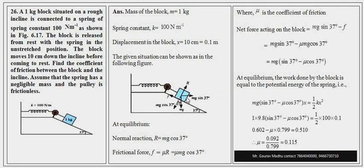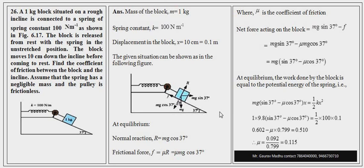जब block 10 cm पर आकर रुक जाएगा, तो block ने spring पर जितना work किया वो spring में potential energy की form में store हो जाएगा। जैसे-जैसे spring stretch होता है, उसमें potential energy आती जाती है क्योंकि shape change होने की वज़ह से energy store होती है। Spring की potential energy का formula है: ½kx²।